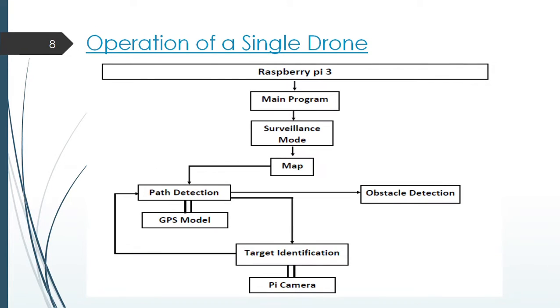Operation of a single drone. This diagram depicts the entire functioning of a single autonomous drone. In this project, we have kept our focus on obstacle detection, secured communication and building parts of the path detection module where we will be using stereo vision as we have discussed in the previous section.